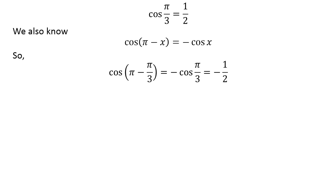So cosine of pi minus pi upon 3 is equal to minus half. As pi minus pi upon 3 is equal to 2 times pi upon 3, so cosine of 2 times pi upon 3 is equal to minus half.